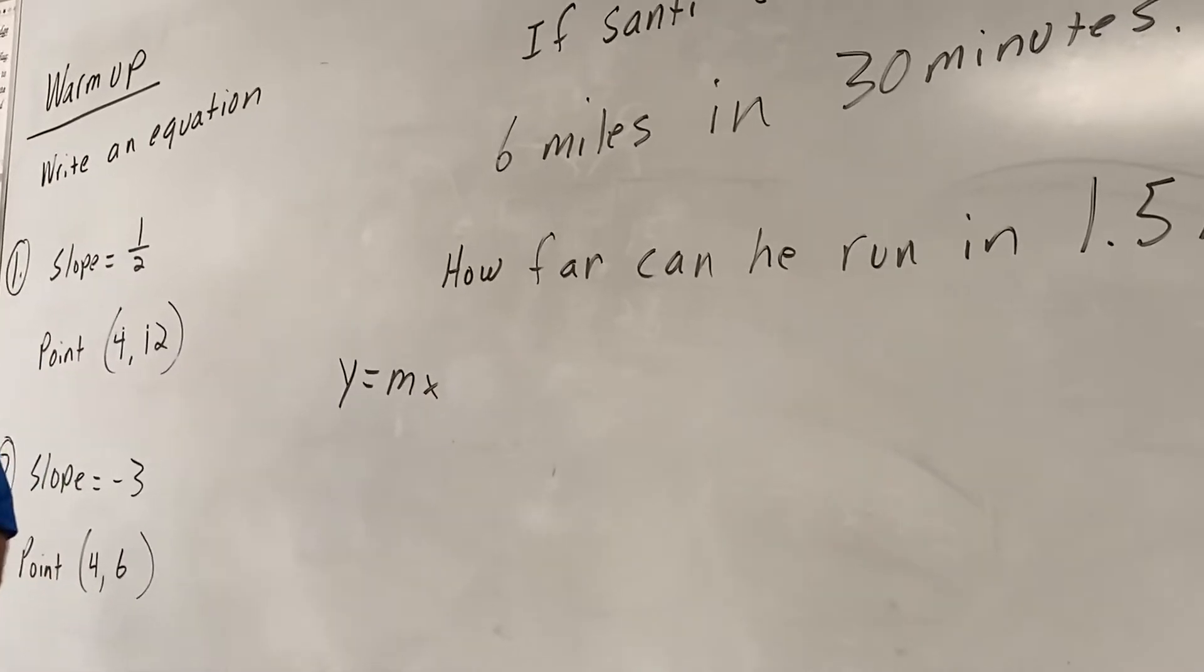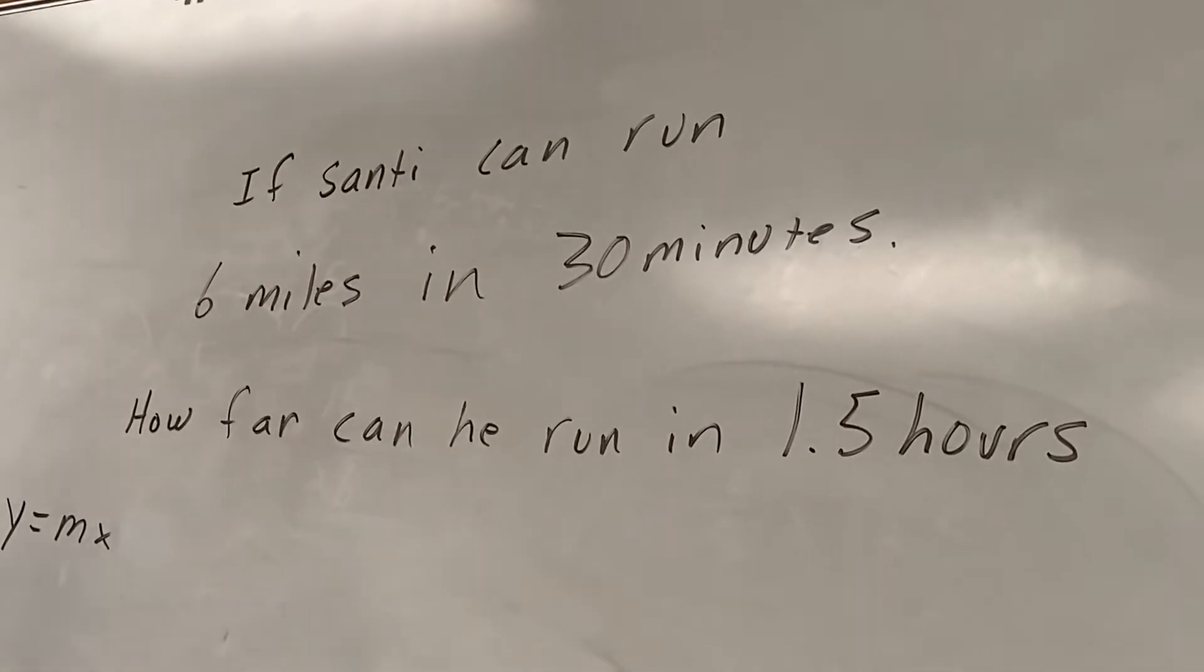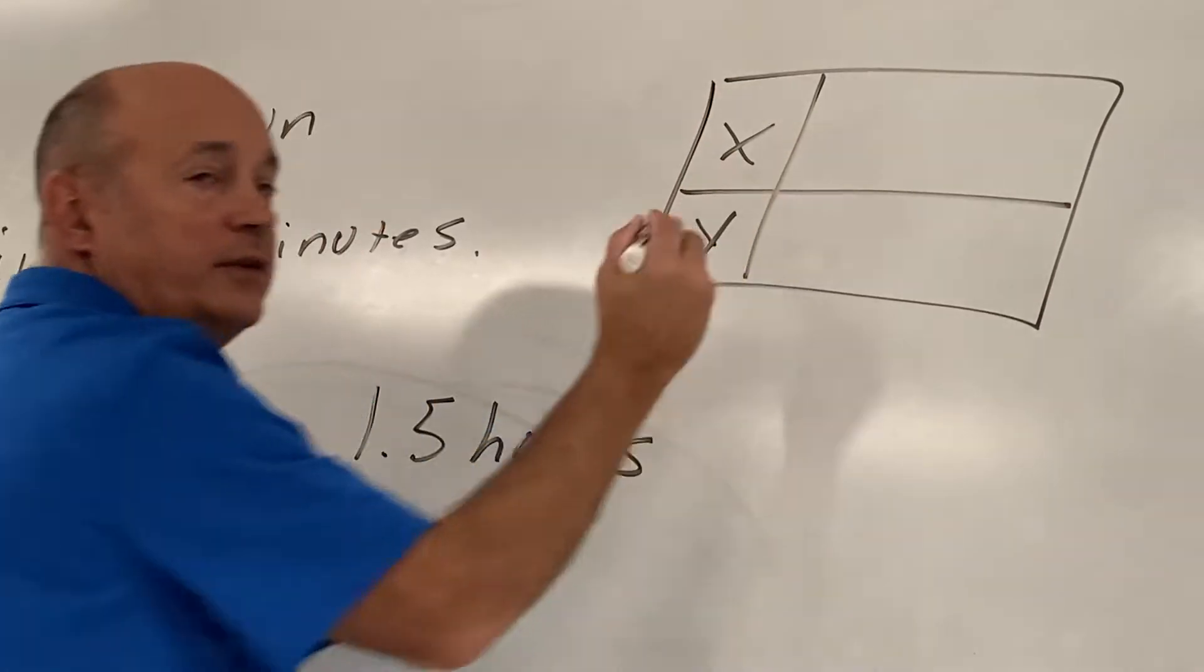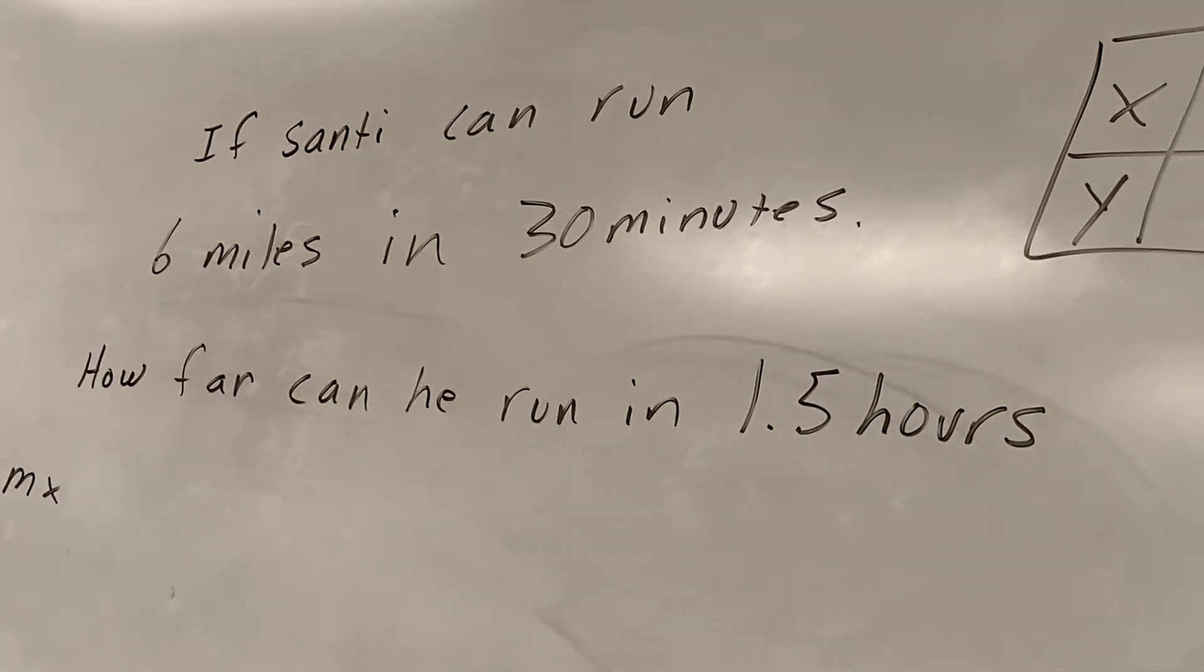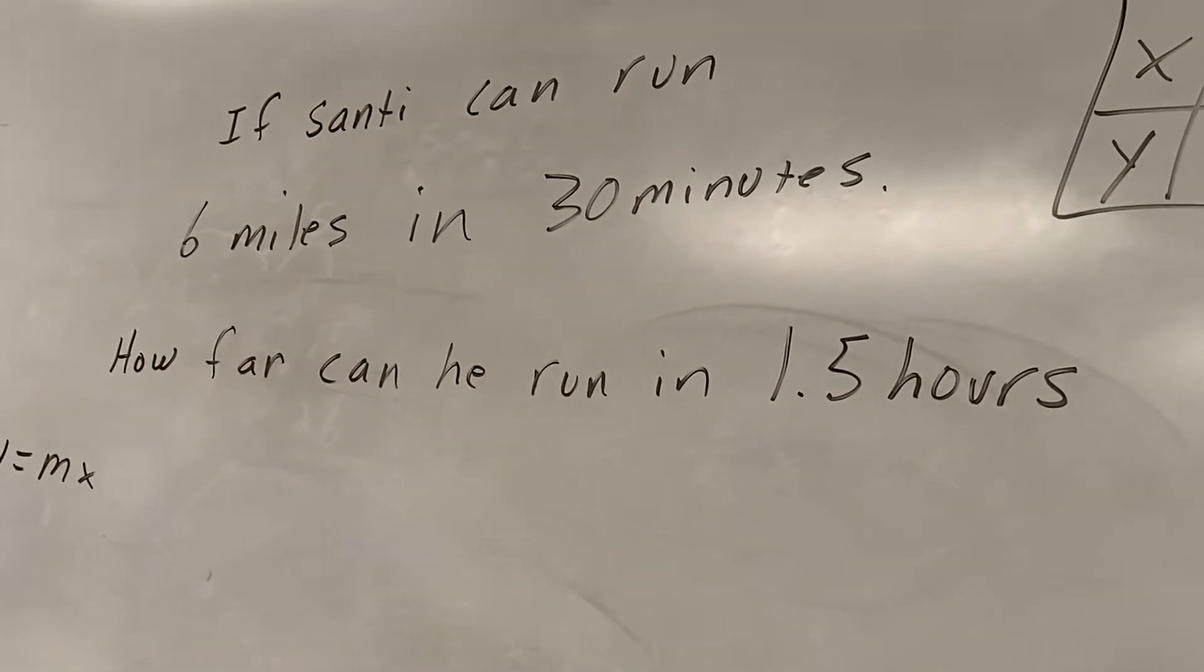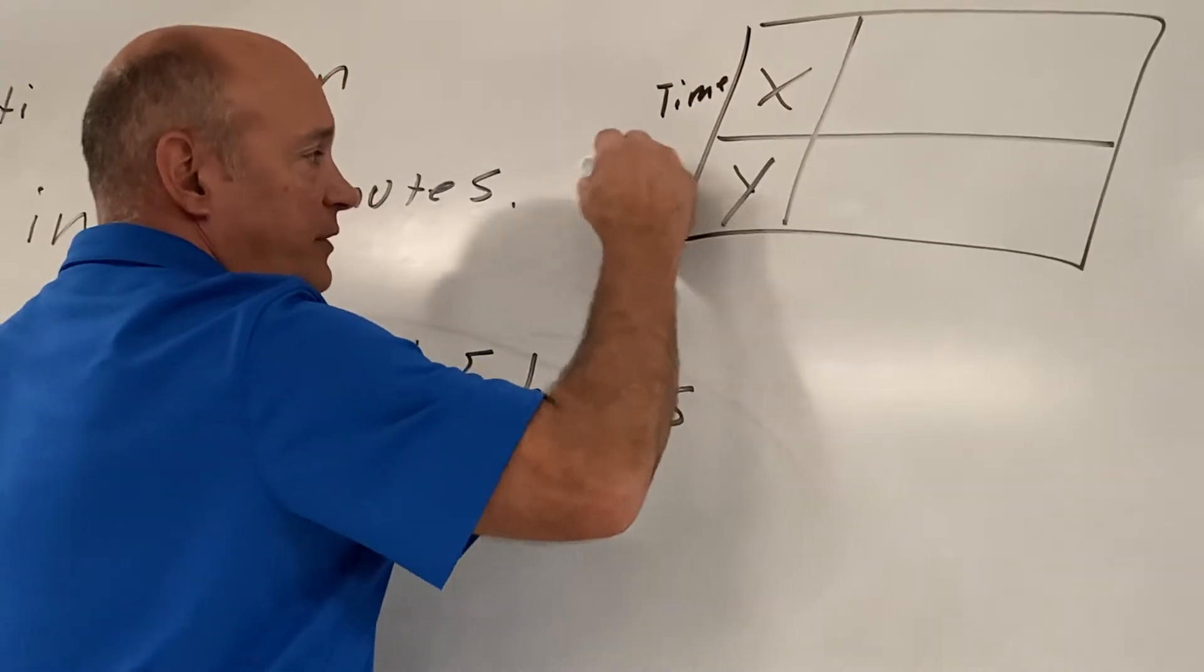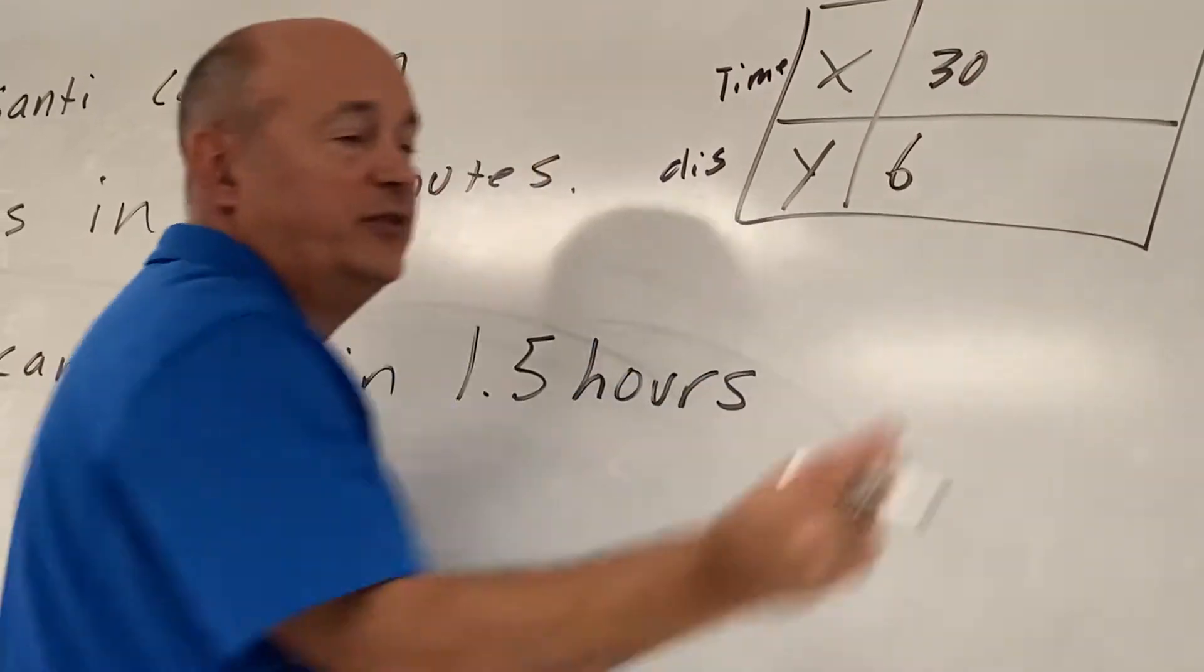Can anybody help me find his slope, Caitlin? Which one's X? The six miles or the 30 minutes? Isaac? The 30 minutes. Time is almost always X. So we'll put time here, distance here. So 30 minutes is six miles. I got one point.